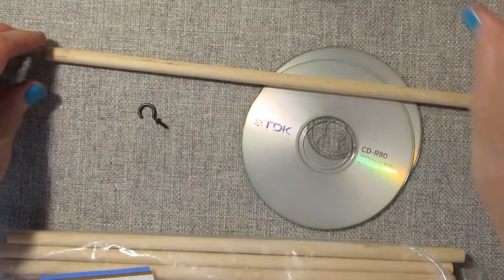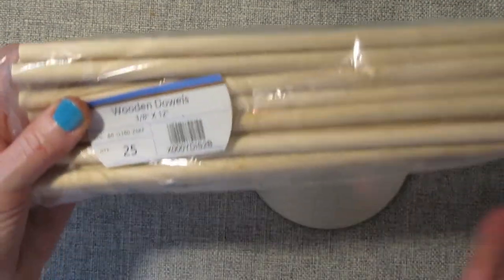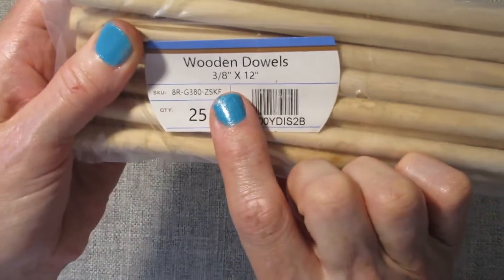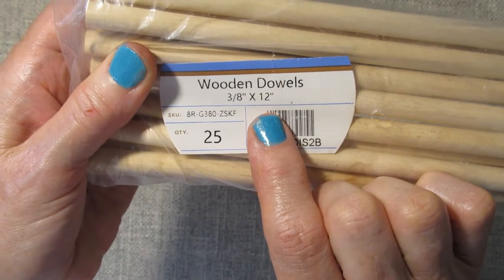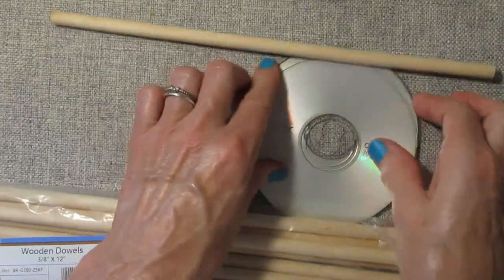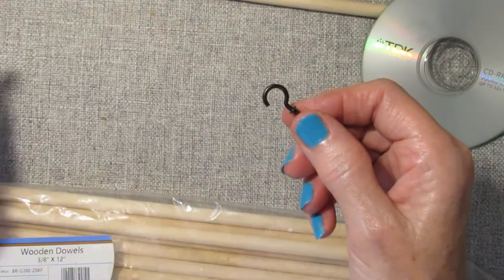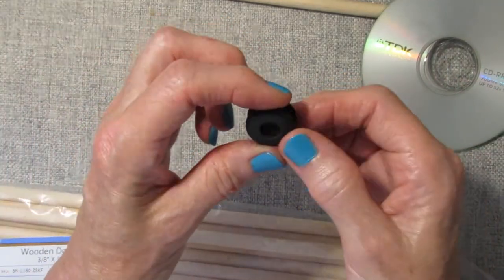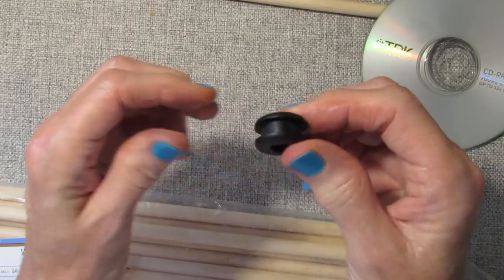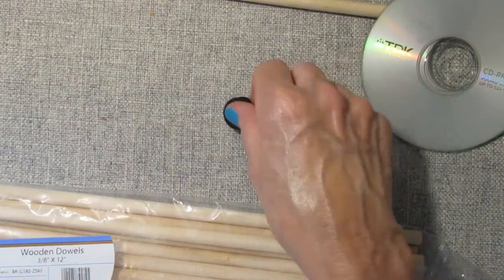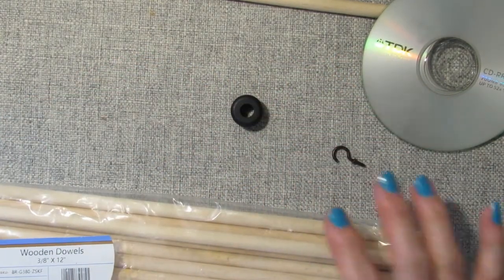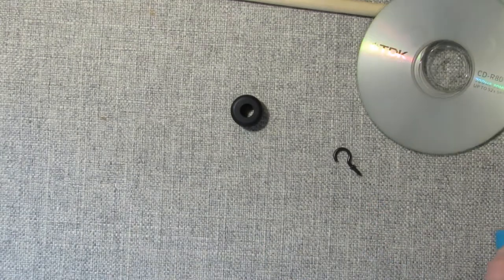The parts are simple. You need a wooden dowel, 3/8 by 12 inches, you're going to need 2 CDs, a cup hook and a grommet—a rubber grommet that's found in the electrical department or online. We'll talk about that because they come in all sizes.